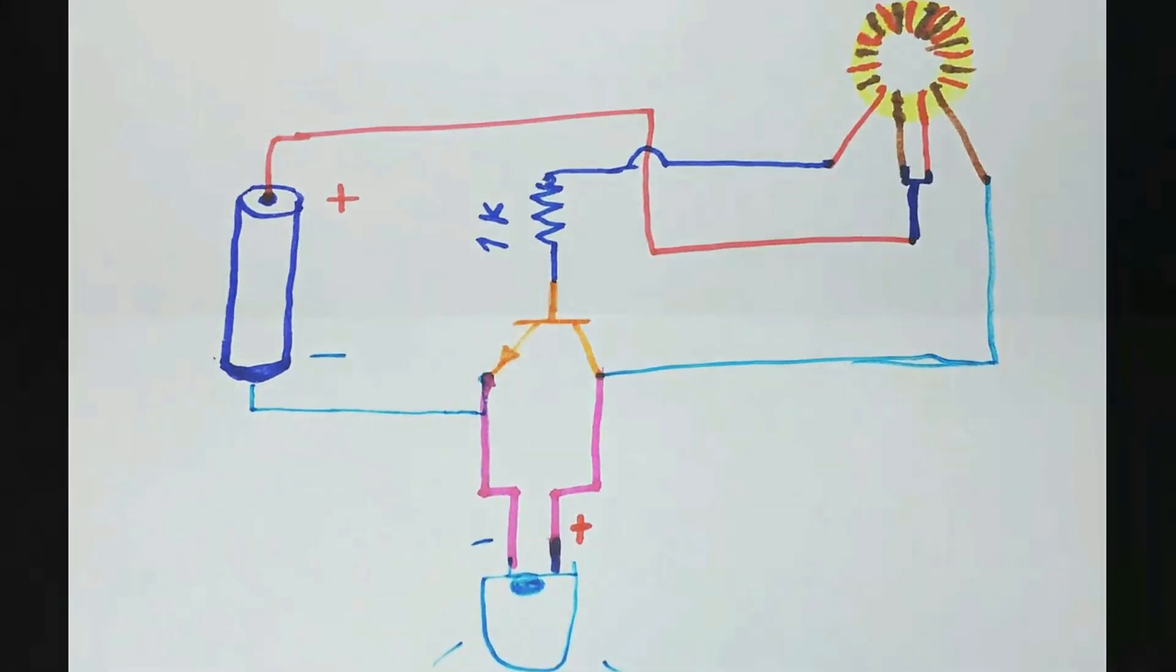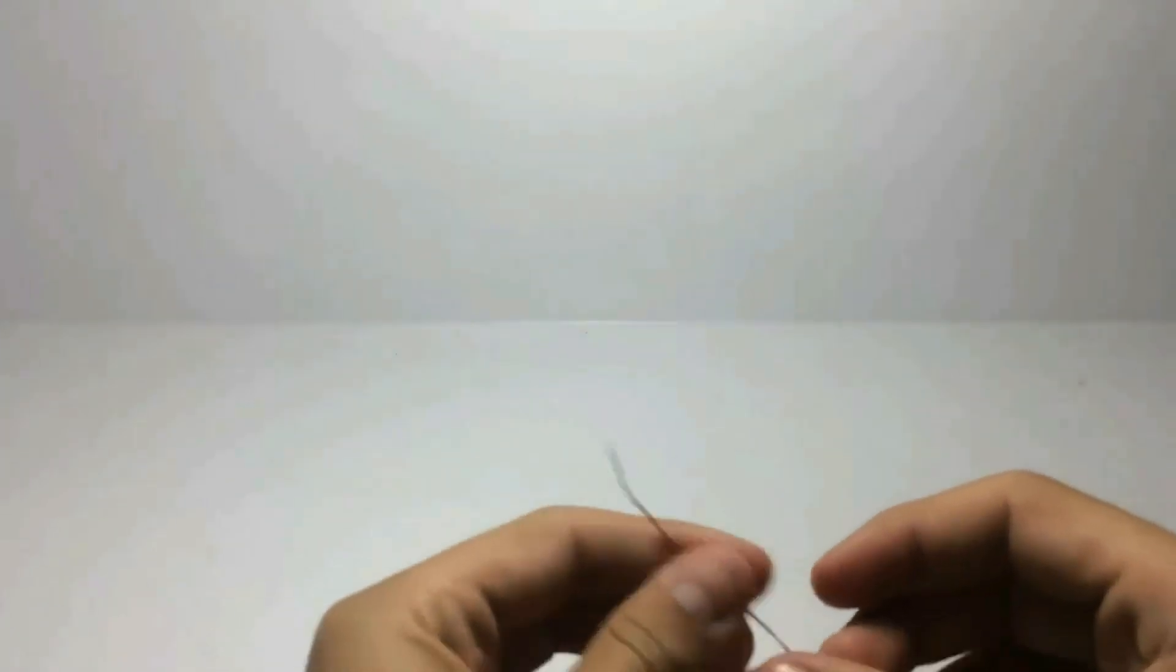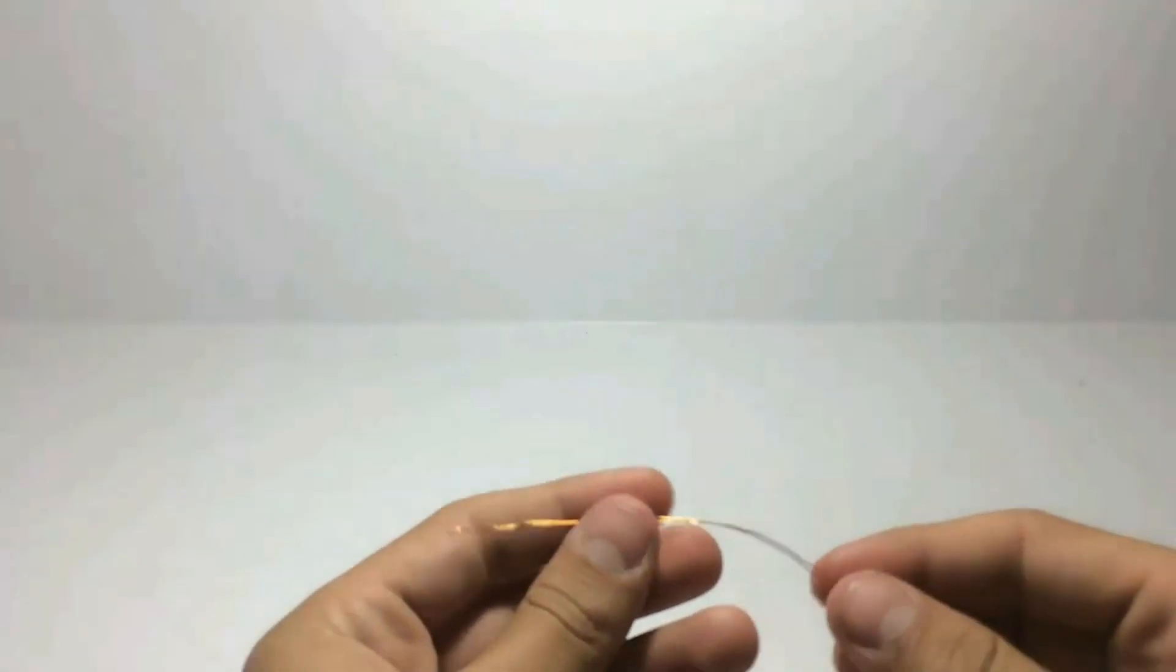The hardest part is the ferrite coil, so now I'm gonna talk about how to make one. For making a ferrite coil you will need two main components which are ferrite core and two copper wires, and twist the two ends together.